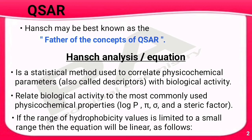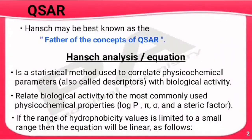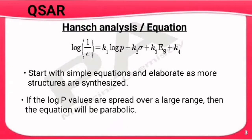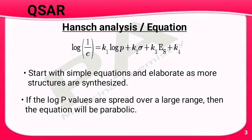If the range of hydrophobicity values is limited to a small range, we get a linear equation. The formula is: log(1/C) = k1·log P + k2·σ + k3·Es + k4, where k1, k2, k3, and k4 are constants. Log P is the partition coefficient, sigma (σ) is the Hammett substituent constant, and Es is the Taft steric factor.